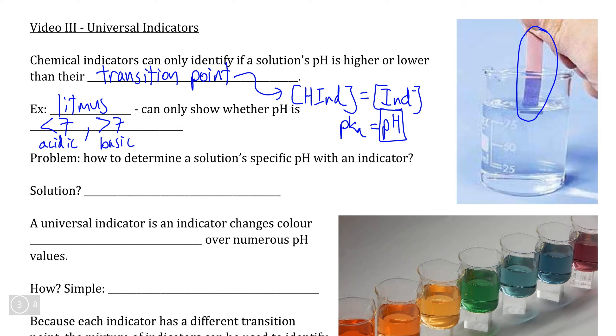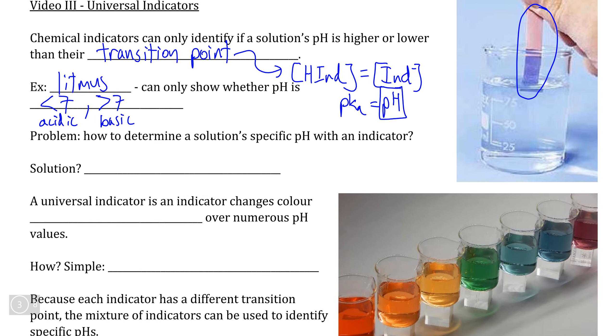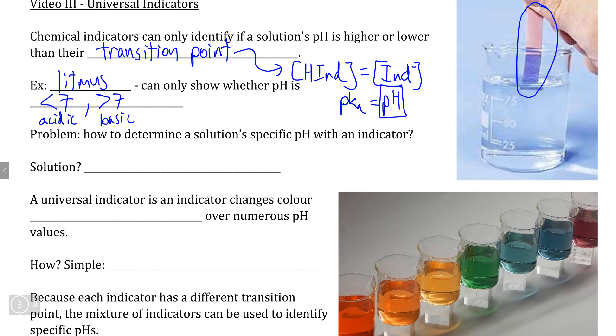So how can we use indicators in order to be able to tell us what the specific pH of a solution is? Well, one possibility is that we try a whole bunch of indicators until we find one that has a transition point that matches the pH of the solution that we're testing. And that kind of leads us to what the overwhelming majority of solutions use, that being a special indicator or rather indicators that we call universal indicator.